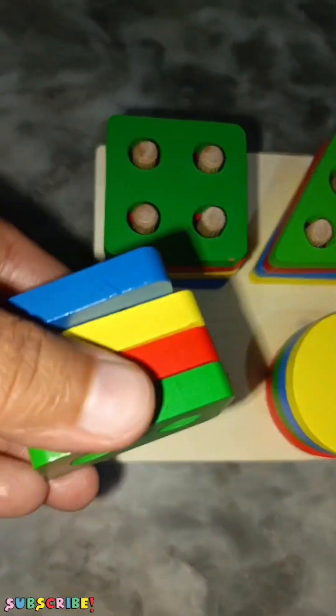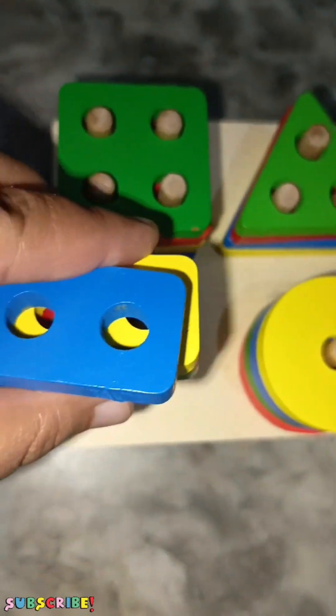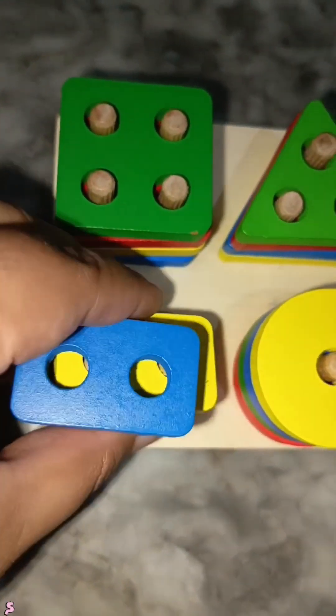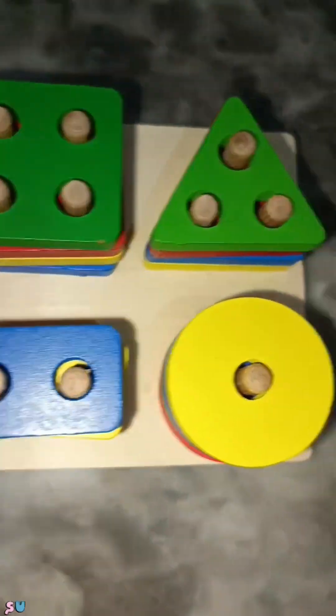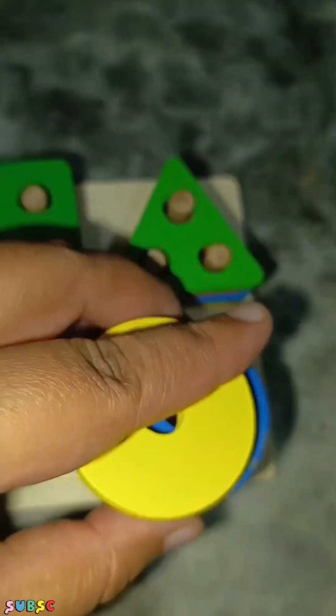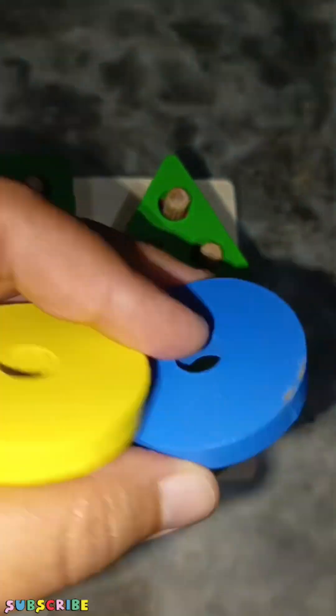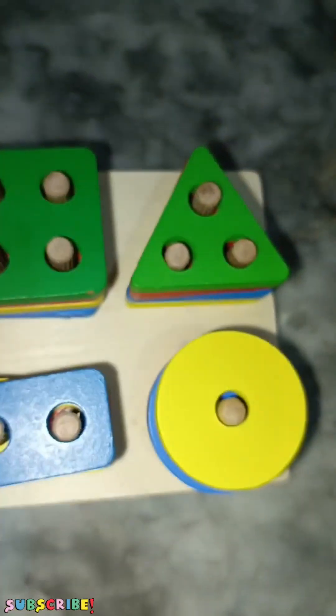Rectangle: green, red, yellow and blue. This is circle: yellow, blue, green and red. Red, green, blue, yellow.